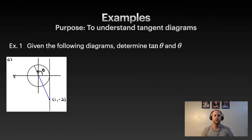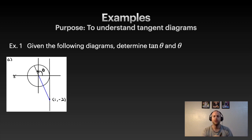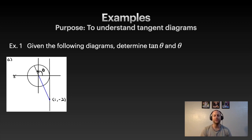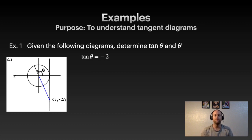Let's try a few examples. Given this diagram, let's determine tan θ and the angle θ. You can see θ is in Quadrant 2. If I extend the terminal arm with the blue line, the point at which it contacts the tangent line gives the value of tan θ — which is the distance away from the x-axis. In this case tan θ equals negative 2. To find θ, we first need the reference angle.